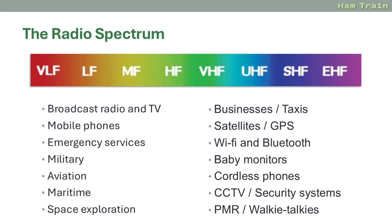The spectrum is also used by devices around the house such as cordless phones and baby monitors, CCTV cameras, security systems, and PMR — Private Mobile Radio — the type of walkie-talkies that you can pick up in electrical shops.